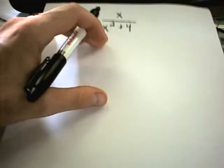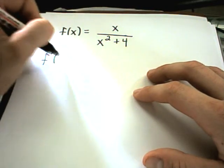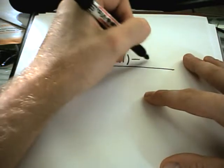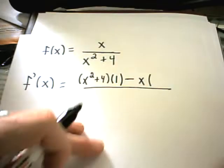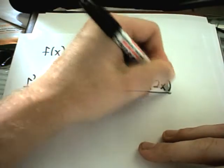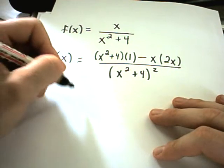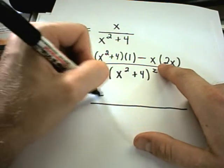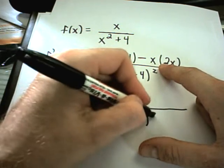So let's do an example. Suppose I have the function x over x squared plus 4. The first thing I'll have to do is take the derivative. Using the quotient rule, we get the bottom part times the derivative of the top, which will just be 1, minus the top times the derivative of the bottom. The derivative of x squared plus 4 is just 2x, all over the denominator squared.